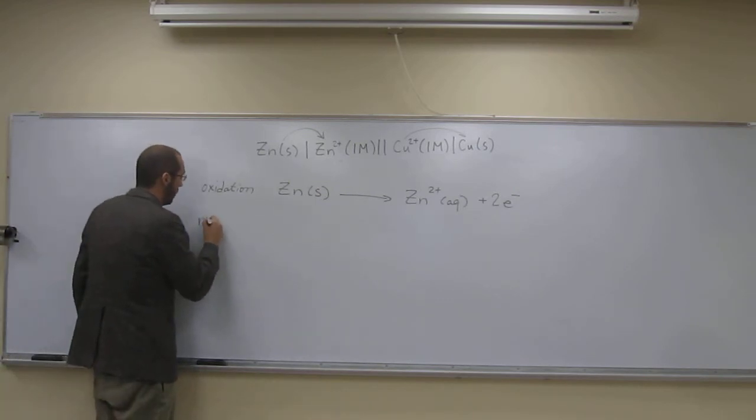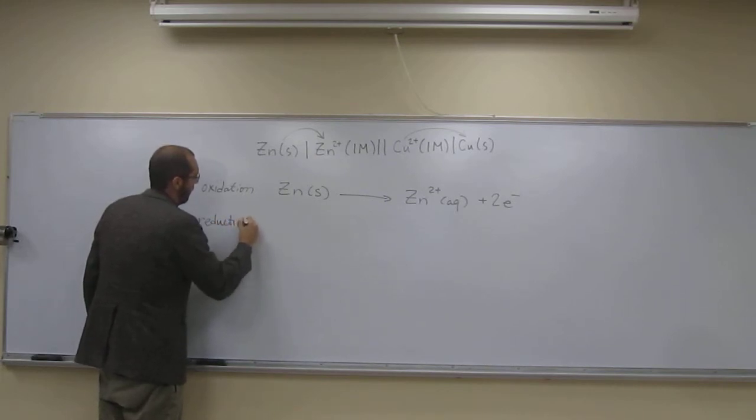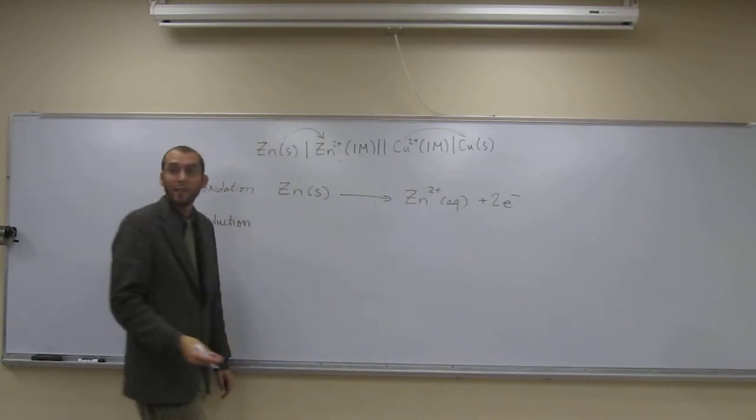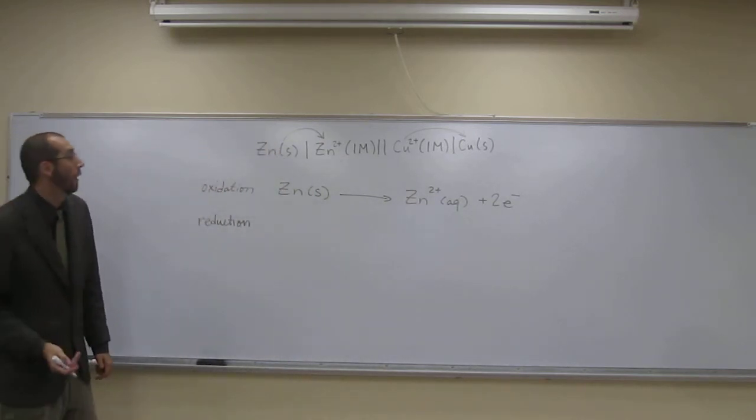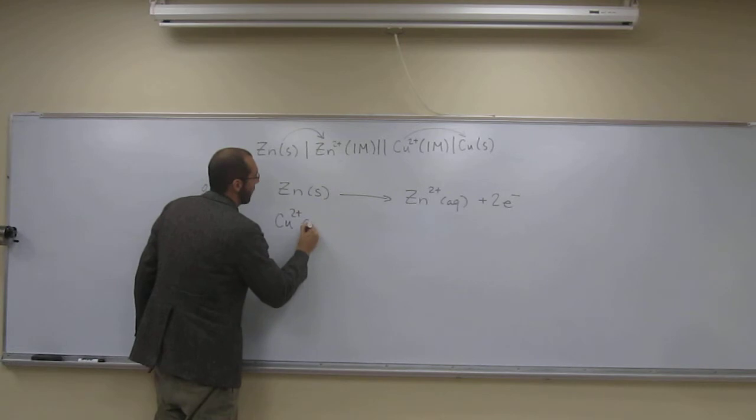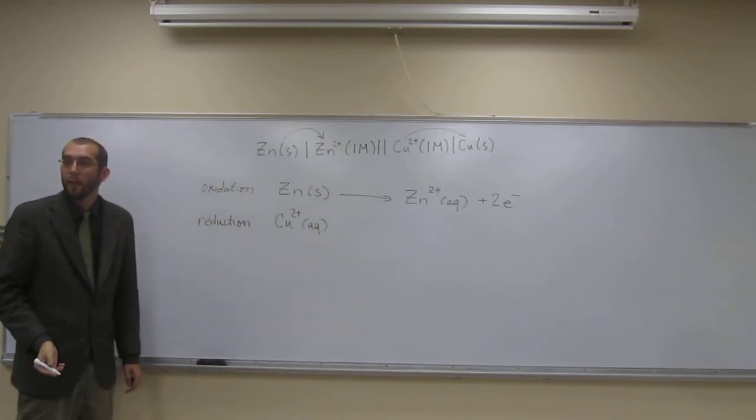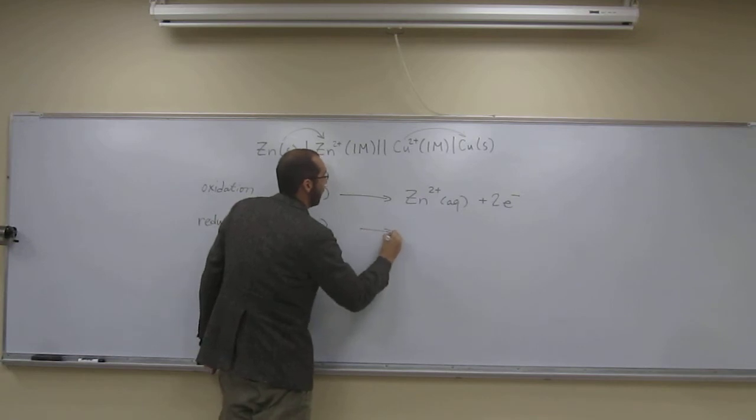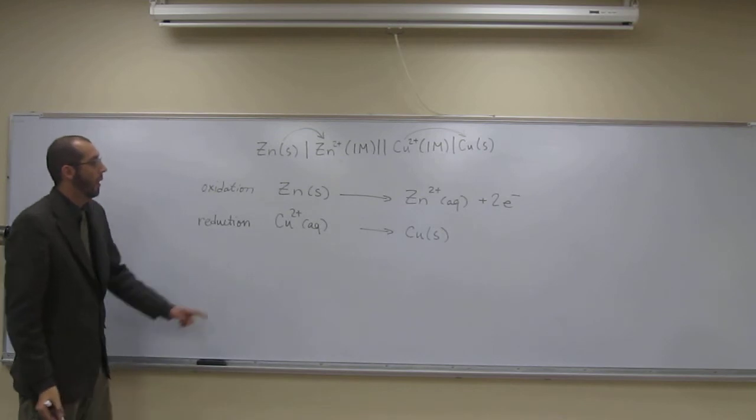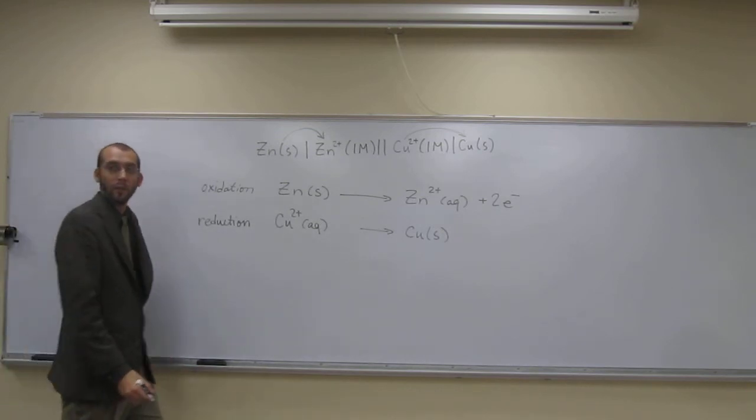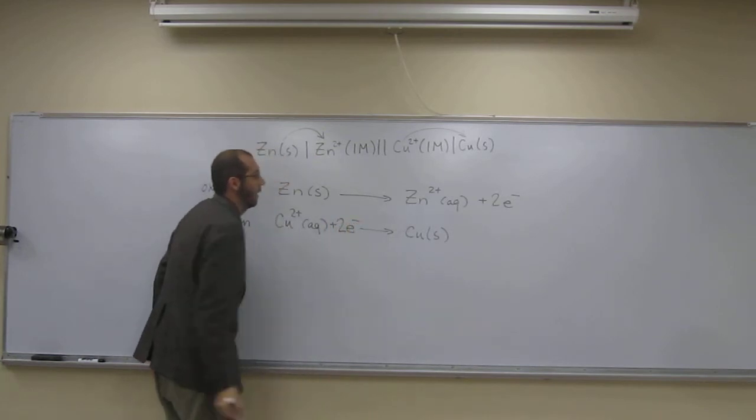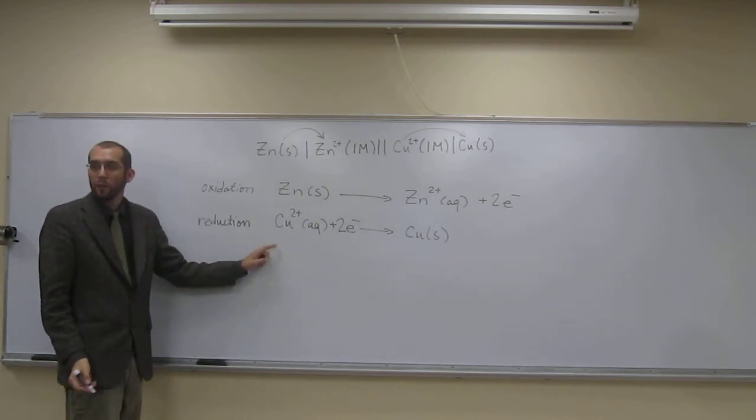The reduction half reaction is going to be the opposite. Reduction is gaining electrons. Remember GR - gain electrons is reduction. What is gaining electrons? It's the Cu²⁺ aqueous going to copper solid. How many electrons do we need to do that? Two. So that's the reduction half reaction: Cu²⁺(aq) + 2e⁻ → Cu(s).